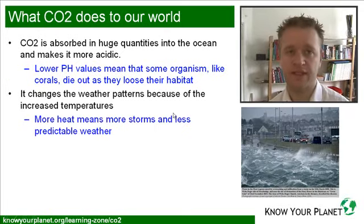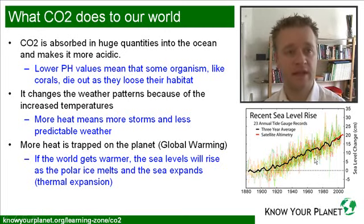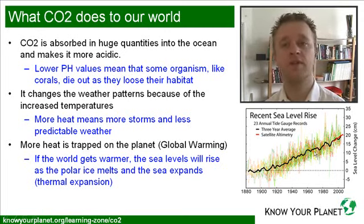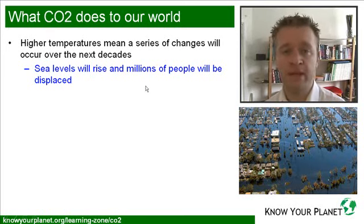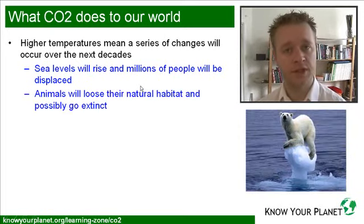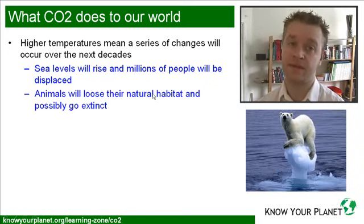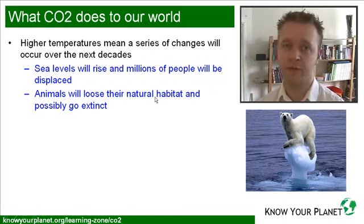We know about the problems of changing weather patterns — more heat means more storms and less predictable weather. More heat is trapped on the planet, which is global warming, and as a result sea levels are going to rise because the ocean will expand and ice will melt and run into the ocean. That's a problem because a lot of us live in low coastal areas, millions of people will be displaced, and it's almost impossible to stop this process. Animals are also going to lose their natural habitat and quite possibly go extinct — a polar bear, for example, is quite dependent on having its ice to live from.